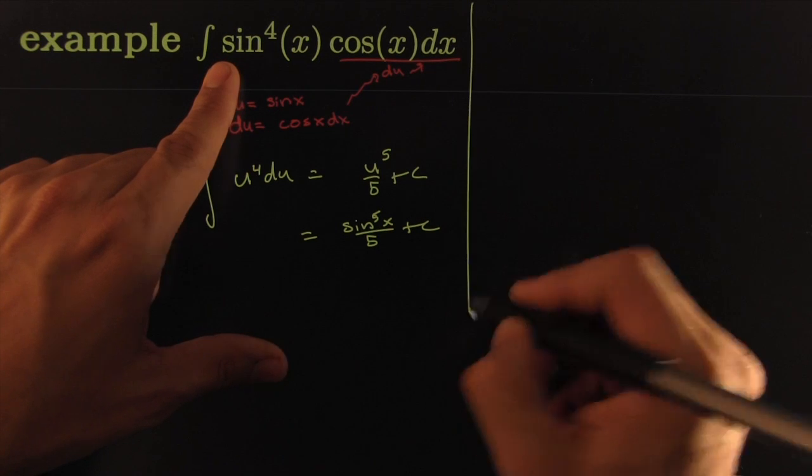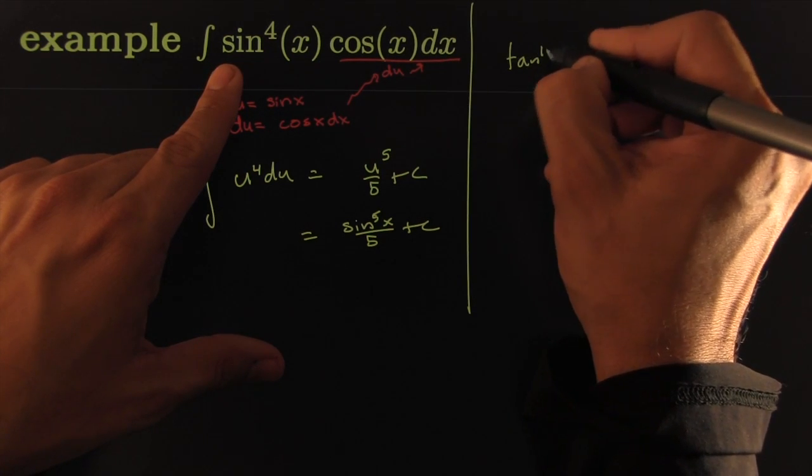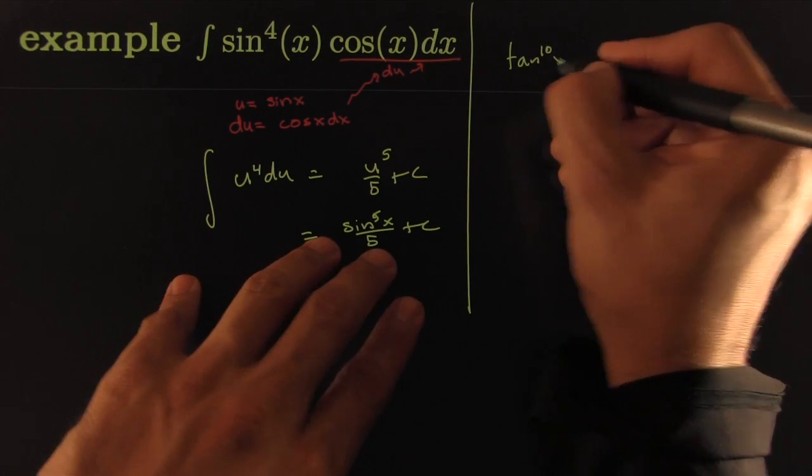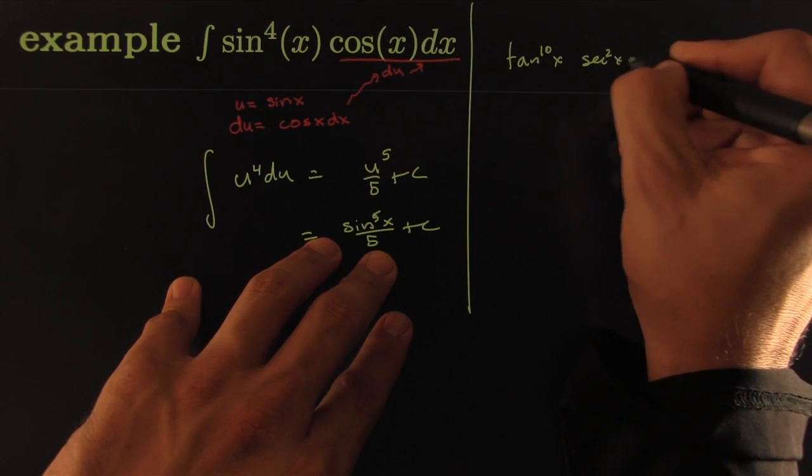Here I'll generalize. Suppose you had tangent to the 10th x. That's too obvious. Yeah, tangent to the 10th x. Then I had a secant squared of x dx.